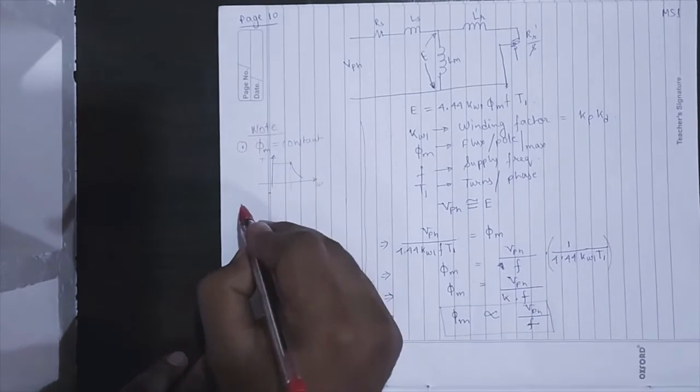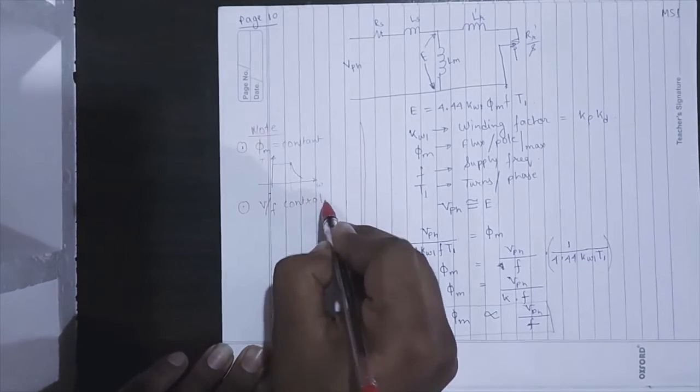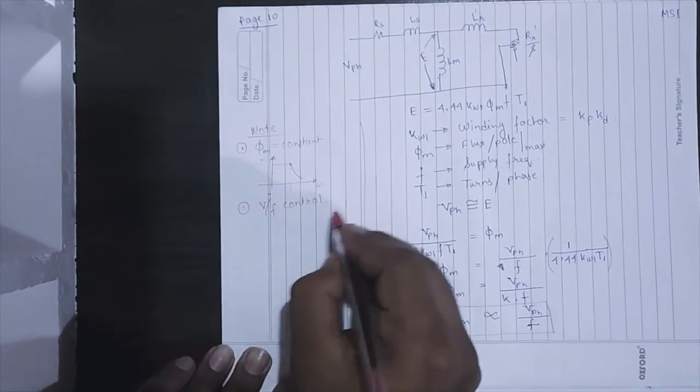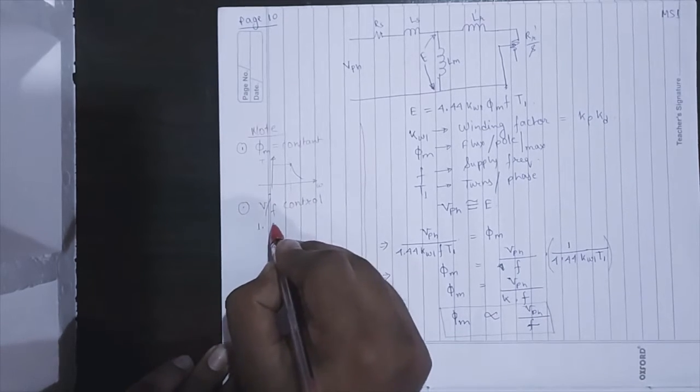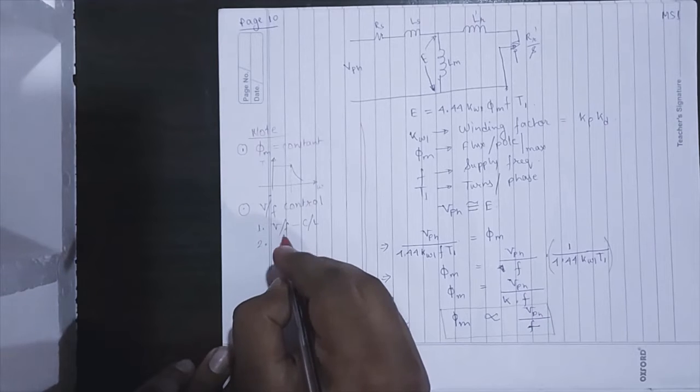The next thing is that from this equation we are getting V by f control. There are many V by f control. One is V by f, it can be applied in closed loop.